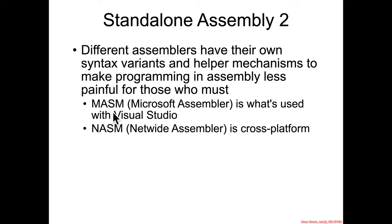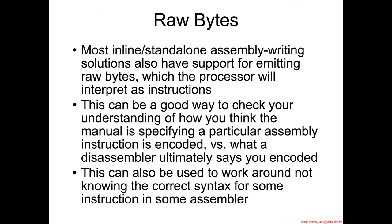MASM is the assembler that Visual Studio is actually going to use — the Microsoft assembler. NASM is a very popular alternative, the Netwide Assembler. I frequently used YASM back in the day, which was Yet Another Assembler. The key benefit of something like NASM is that it is cross-platform, which means that if you wrote something in NASM you could potentially compile it on Windows or Linux. Another very good capability is the ability to emit raw bytes into an assembly stream — so instead of writing a human-readable form like "add rax, 1", you write the specific bytes that the processor will interpret as that instruction.